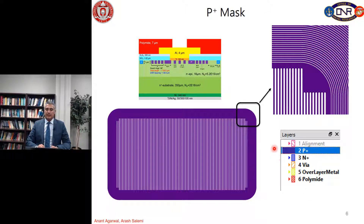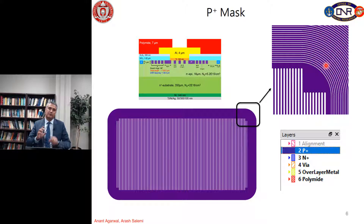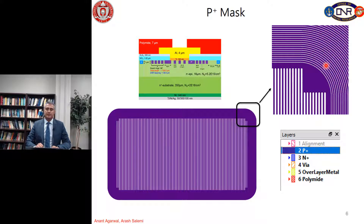Here is the P+ mask used to form the P+ regions in the active area and the guard rings. For the active area, we have fingers which are parallel with a width of 2 micrometers and a distance of 2.5 micrometers. The guard rings have a width of 2 micrometers and a distance of 0.8 micrometers. One important thing to note is that we need rounded corners for all power devices in order to reduce electric field crowding, otherwise it causes a decrease in breakdown voltage. By rounding the corners we can achieve a stable breakdown voltage.